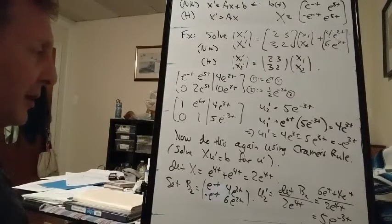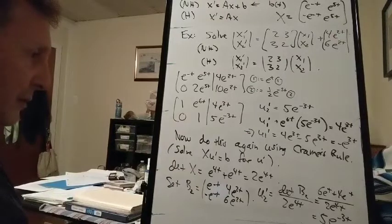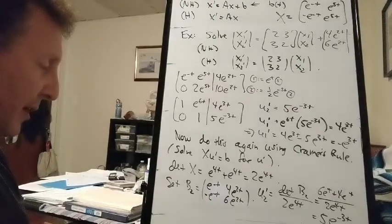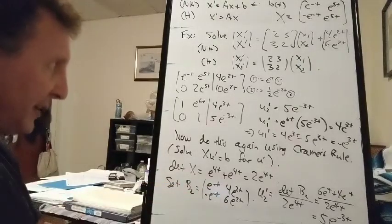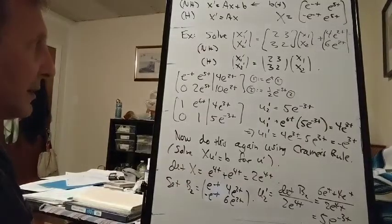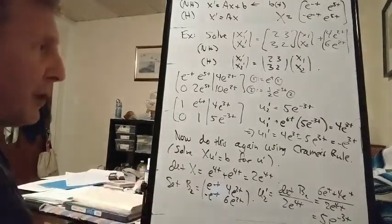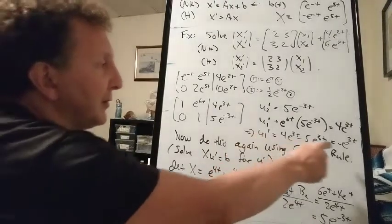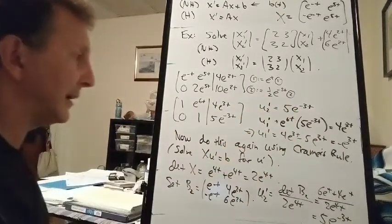It looks like doing this by Cramer's rule is faster than doing the row operations — the answer pops right out. That may be especially true when we have matrices with functions of T, because row operations can be a bit cumbersome. Either way, both methods agree: u1 prime = −e^{3t} and u2 prime = 5e^{−3t}.